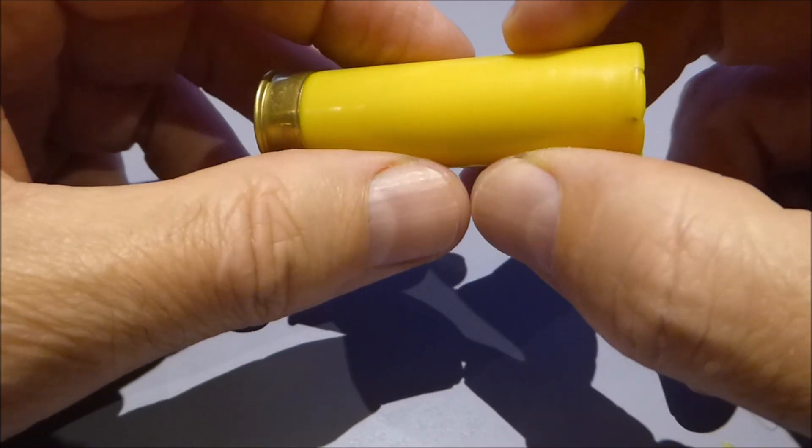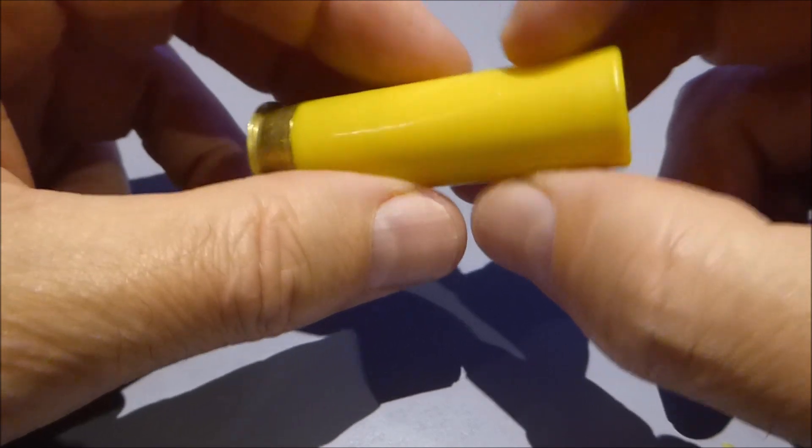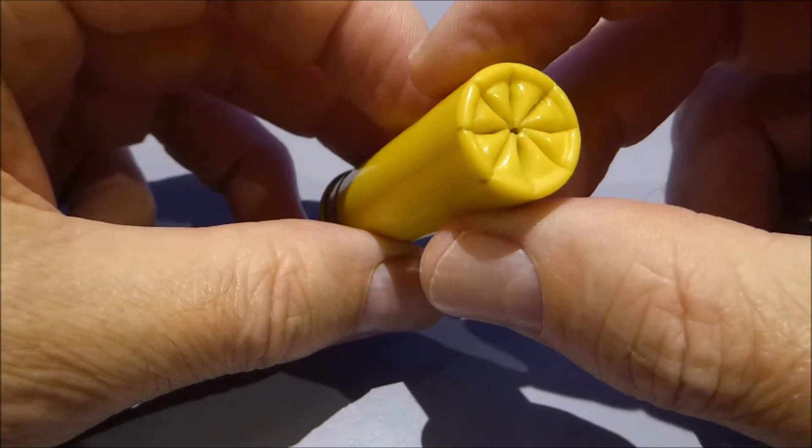The main thing I'm looking for is evidence that the tungsten shot has not penetrated the wads and damaged the chamber or the barrel.